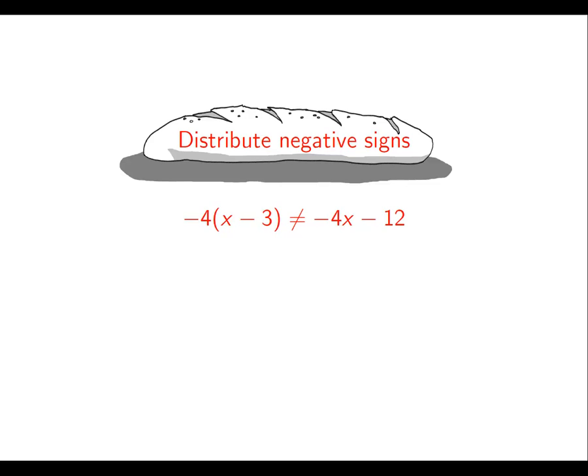I often see people produce an answer like that, minus 4x minus 12. Have a think for a moment about why that might be an incorrect answer. Well, if at first you thought that was the correct answer, then you probably need to be a little more careful about how you deal with minus signs.